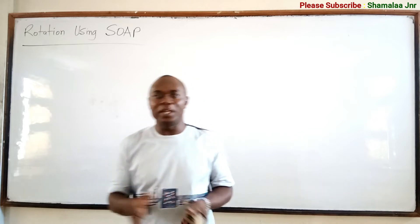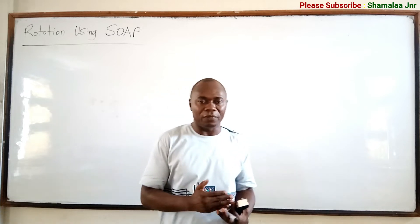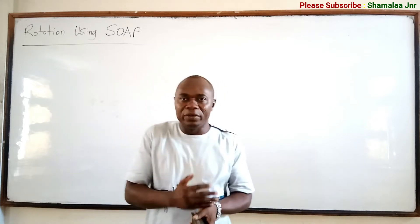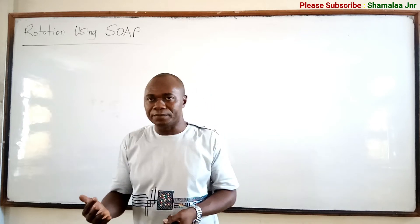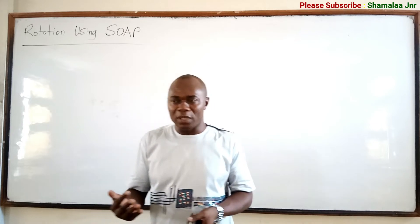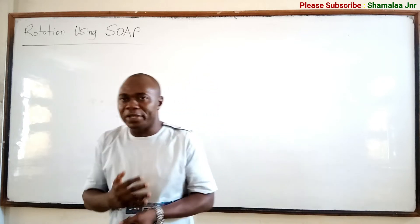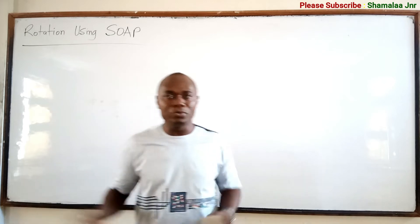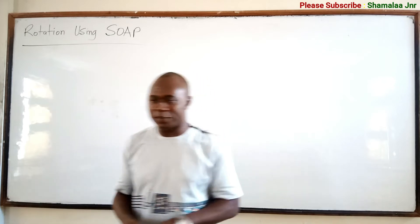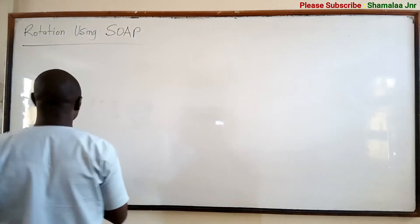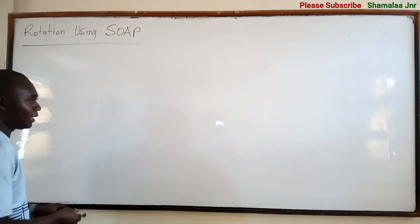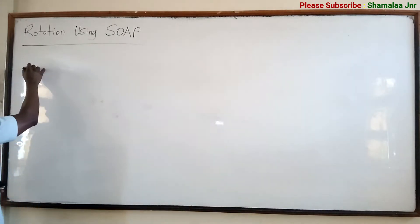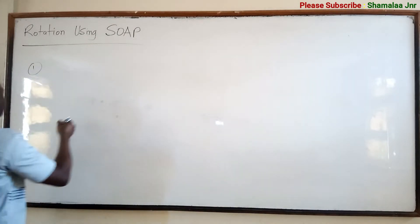When you are asked to find the image of a given point through a given rotation about a point which is not the origin, how do you go about it? So viewers, let us look at a question like this. Question number one.